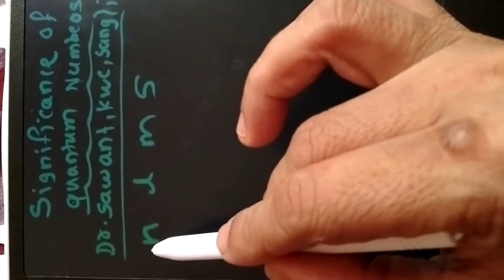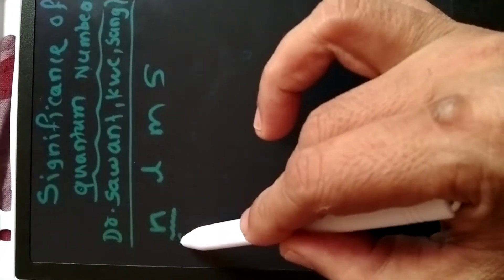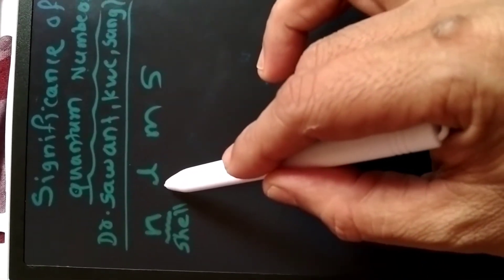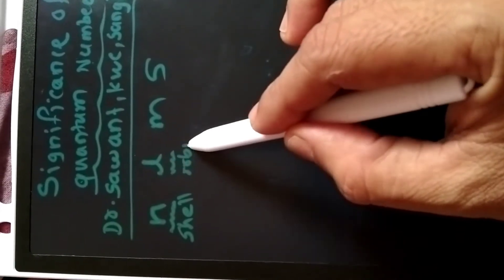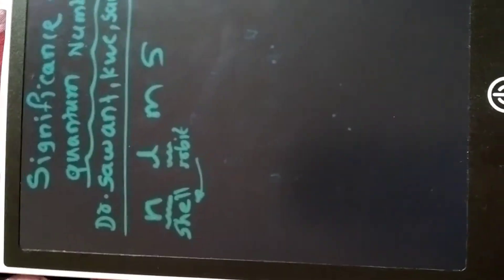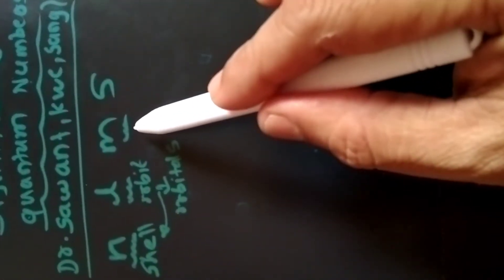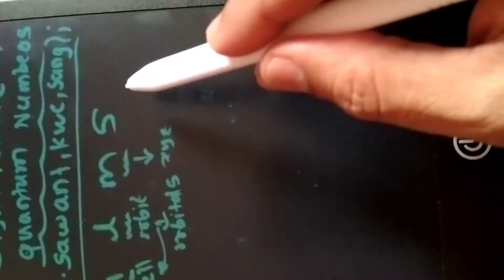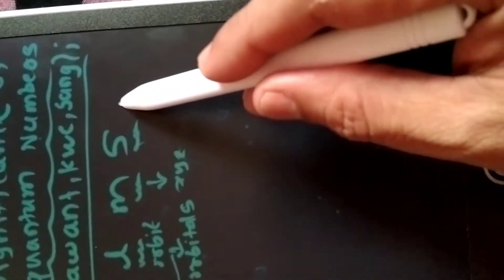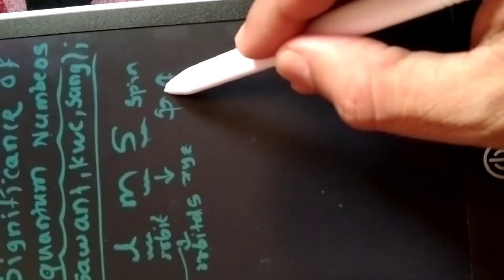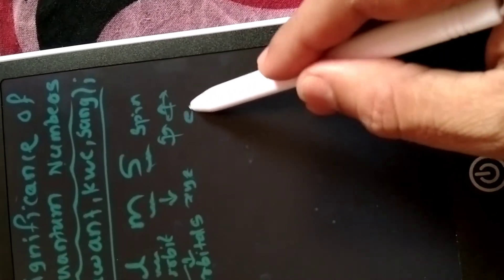The first quantum number is the principal quantum number n — it explains the shell or principal energy level of the electron. The second is the orbital quantum number l, which explains the sub-energy levels and orbitals. The third is the magnetic quantum number, which explains the orientations of the electron along x, y axes, with positive and negative values. The last is the spin quantum number, which explains the clockwise or anticlockwise spin of electrons in the orbital.